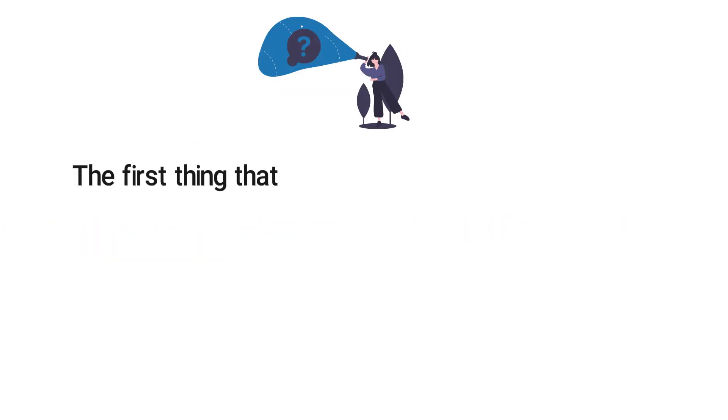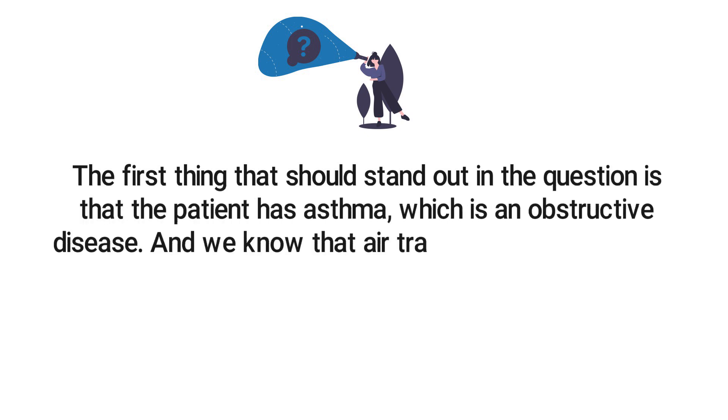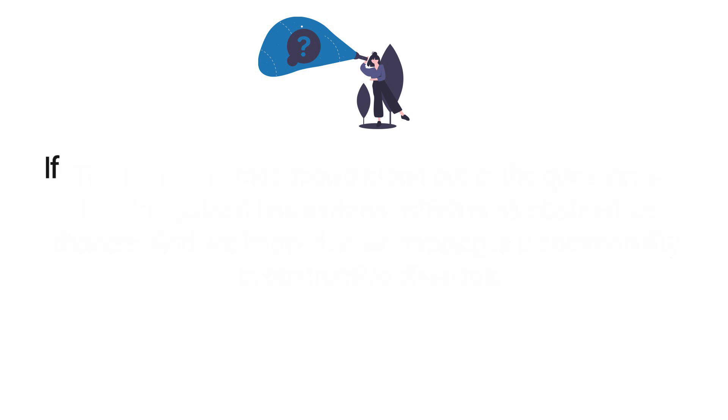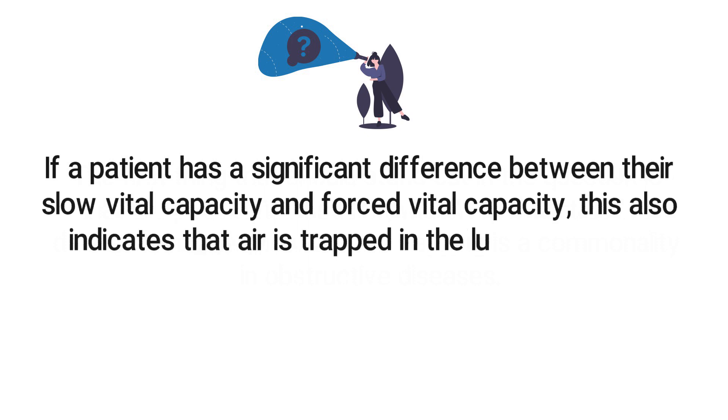The first thing that should stand out in the question is that the patient has asthma, which is an obstructive disease. We know that air trapping is a commonality in obstructive diseases. If a patient has a significant difference between their slow vital capacity and forced vital capacity, this also indicates that air is trapped in the lungs when the patient exhales forcefully.